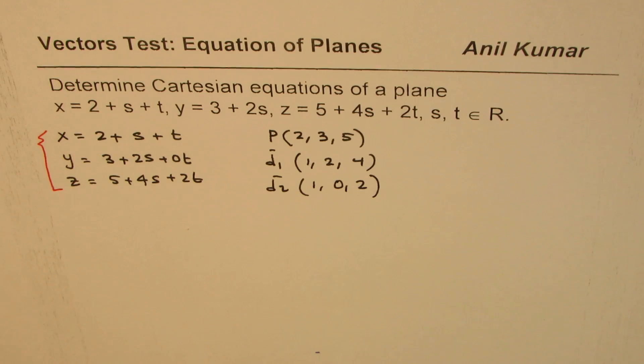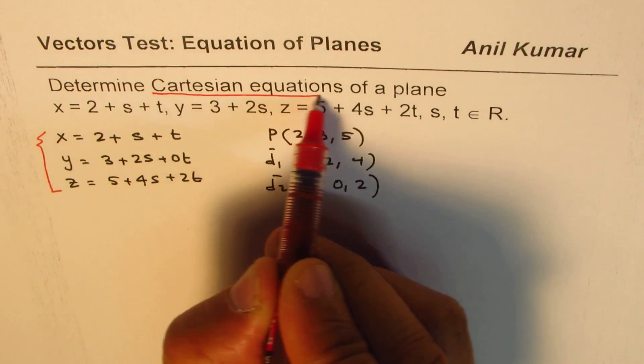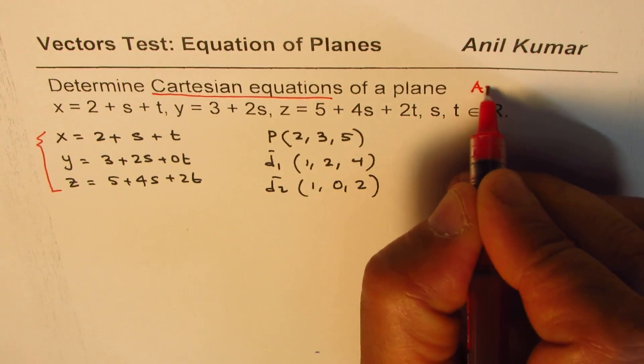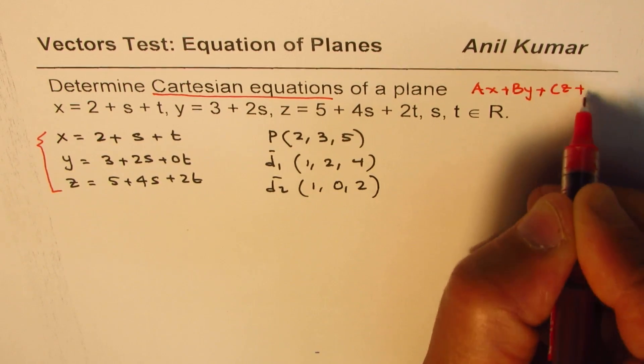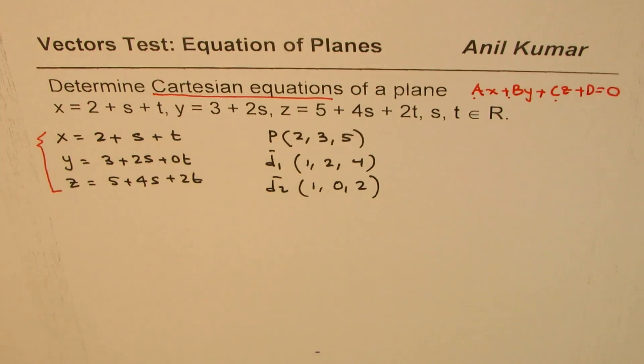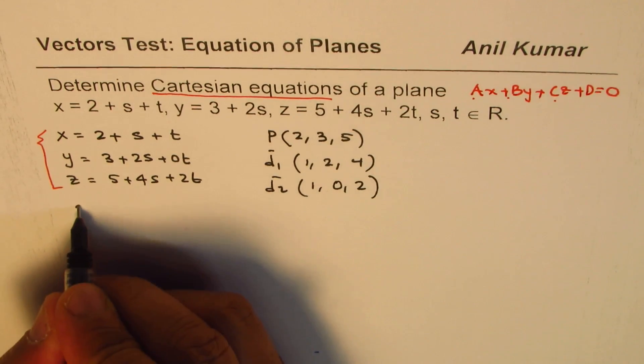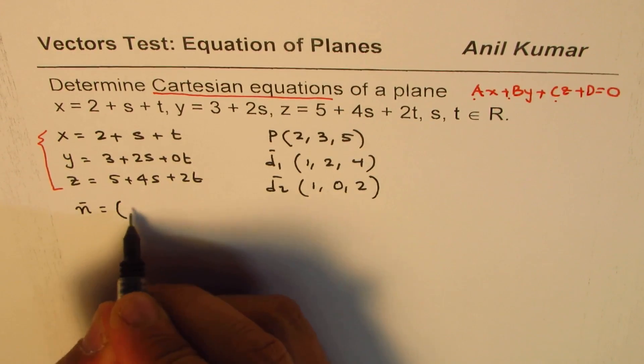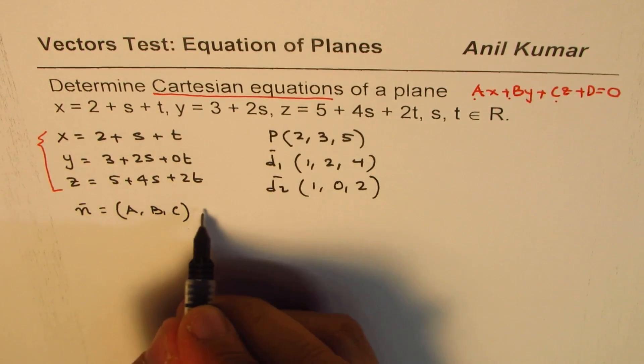Now we need to write the Cartesian equation, which is of the form Ax + By + Cz + D = 0, where (A, B, C) is the normal vector. How do you get the normal vector?